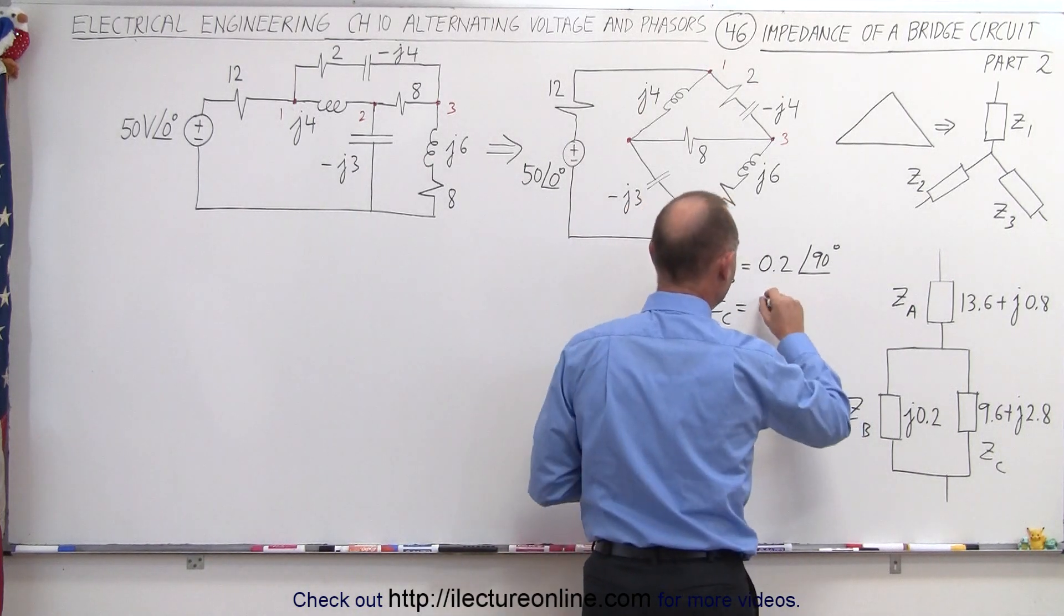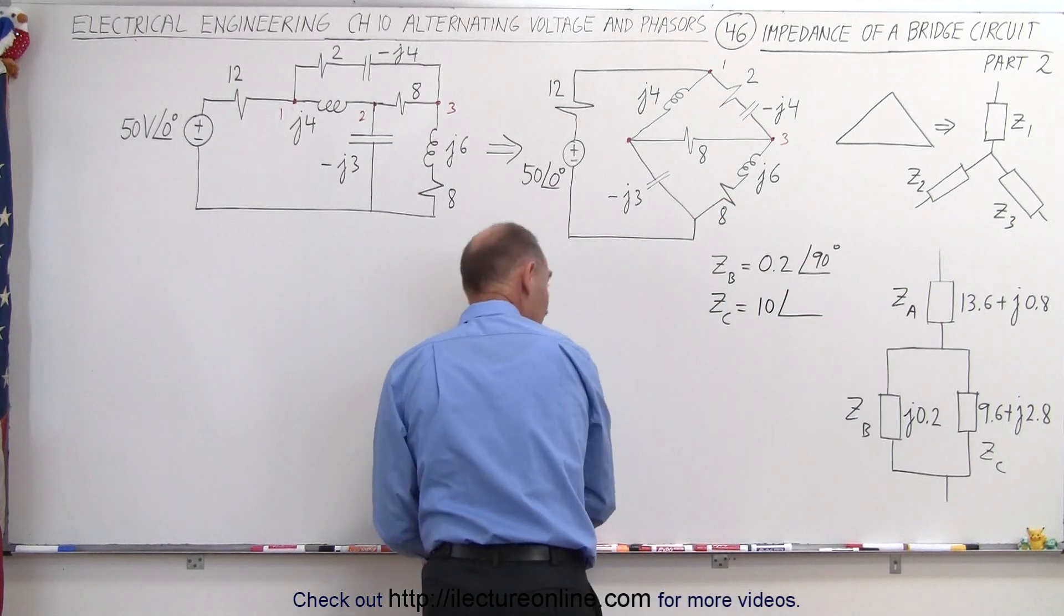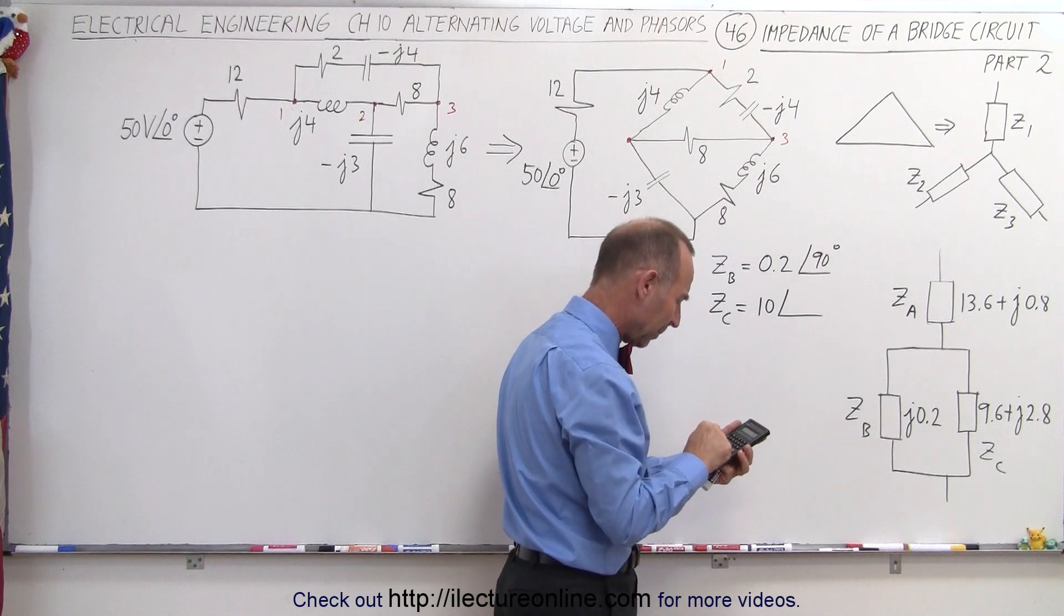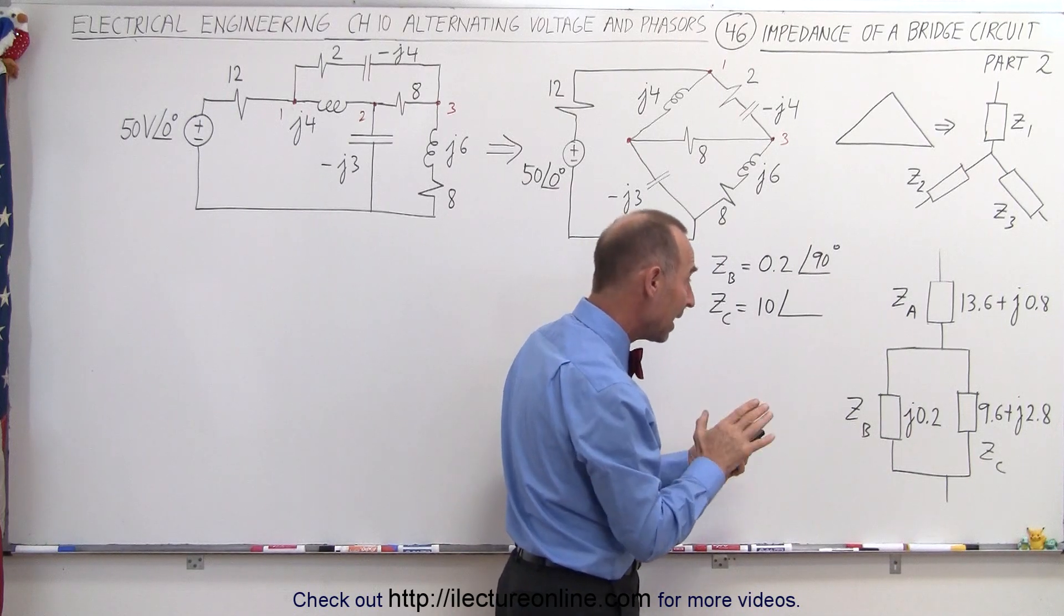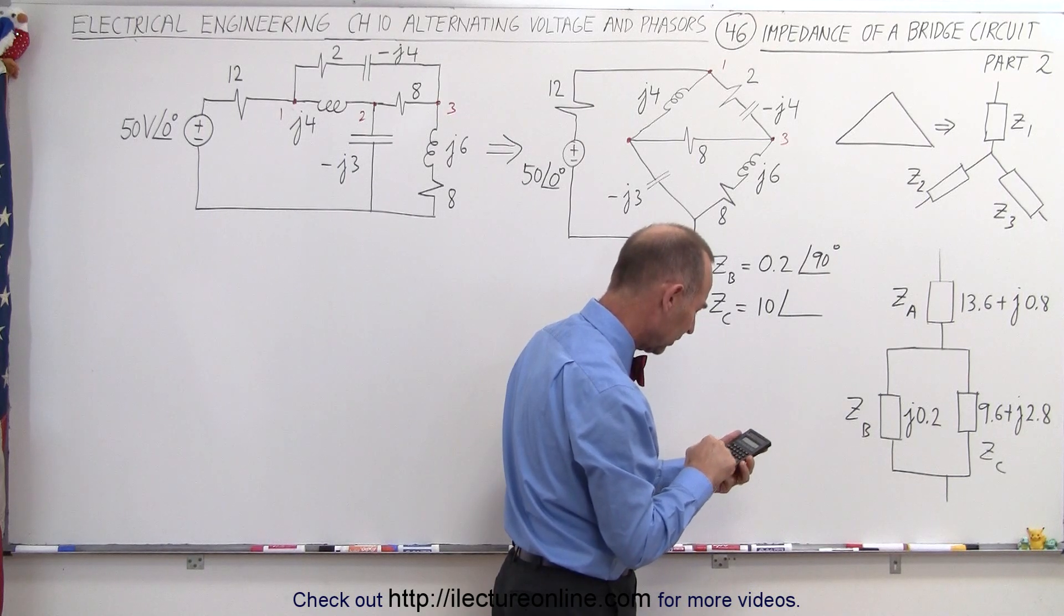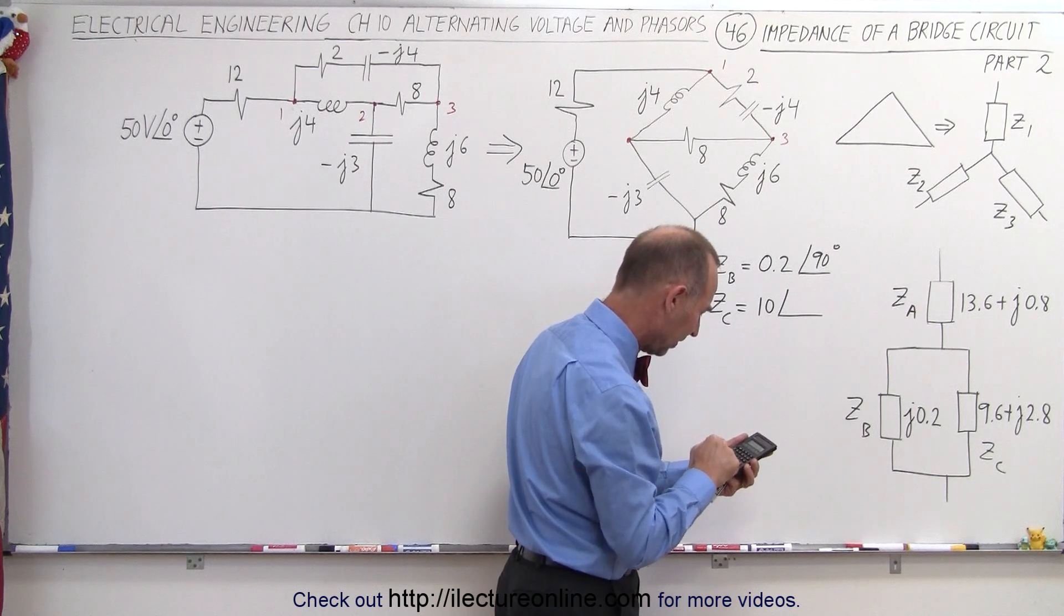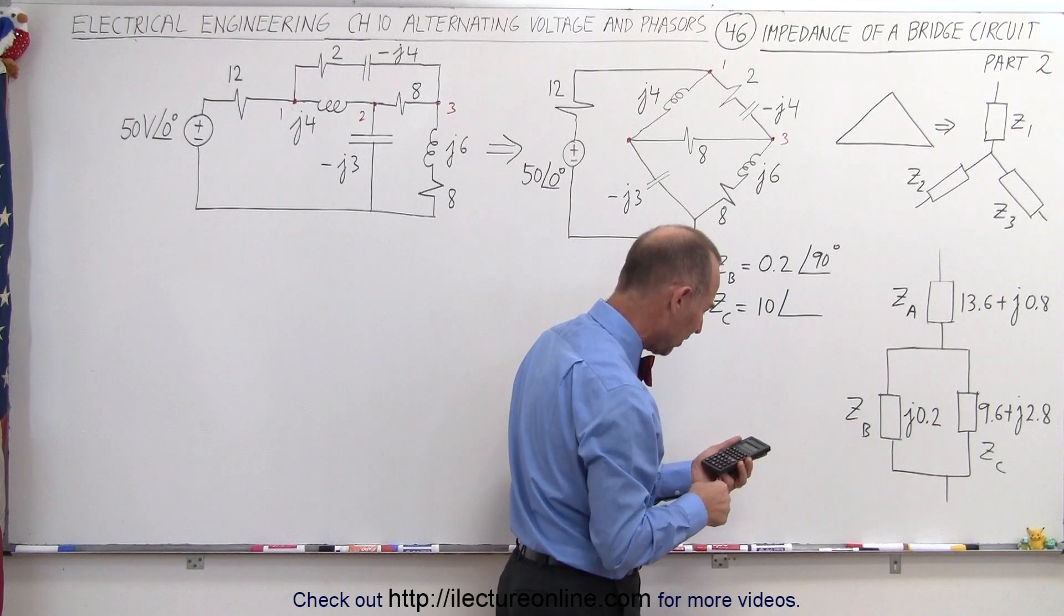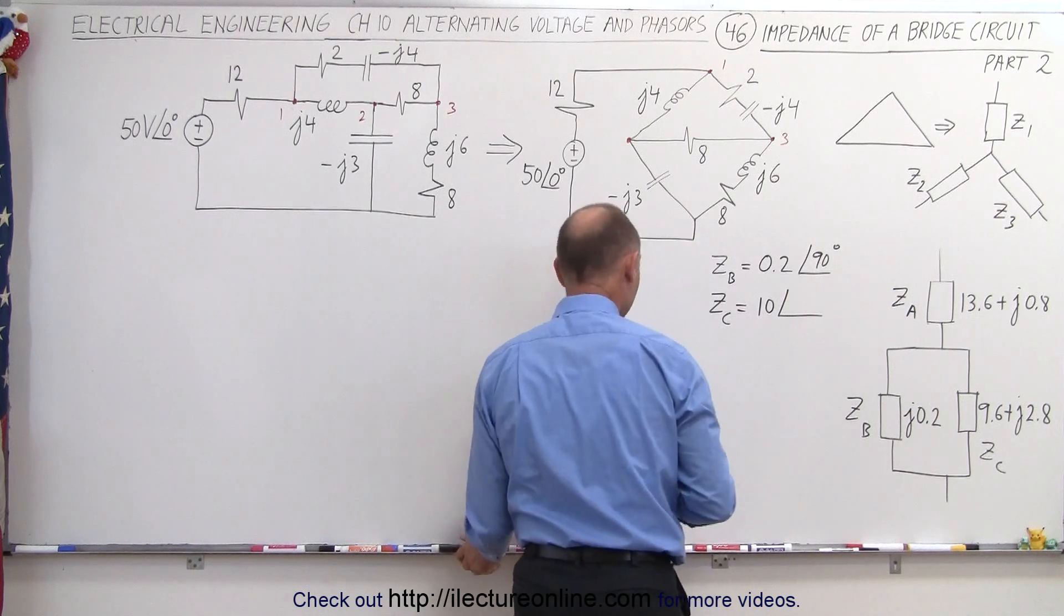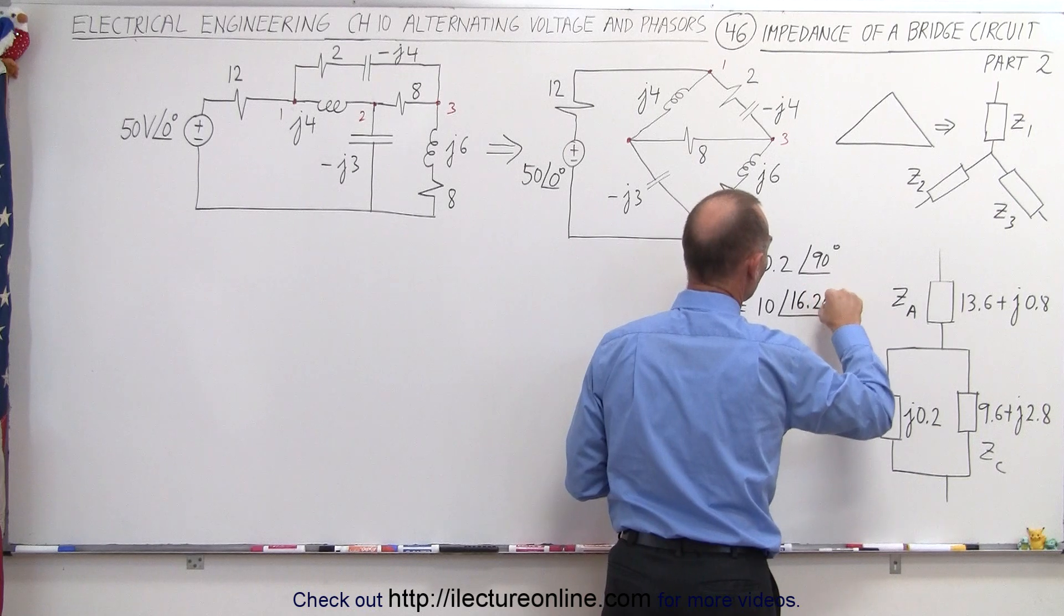So that would be exactly 10 in magnitude. And the phase angle, we take 2.8 divided by 9.6, and we take the inverse tangent of that. Let me do that again. 2.8 divided by 9.6. Now we take the inverse tangent and we get 16.26 degrees.